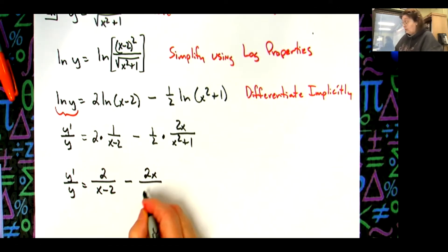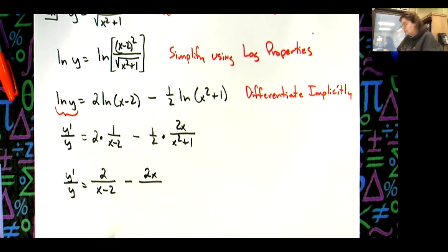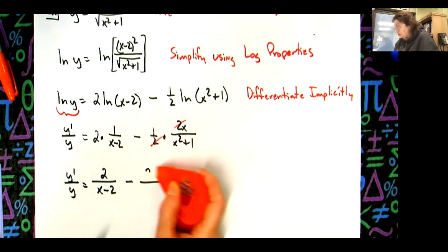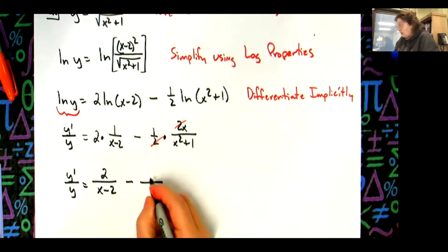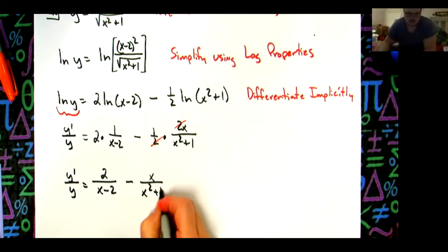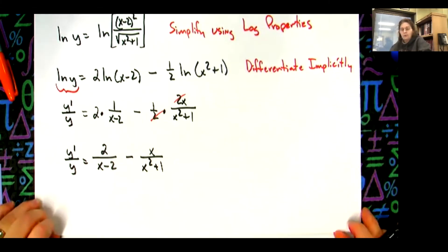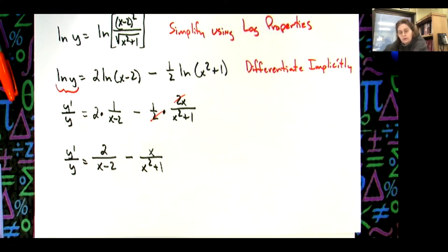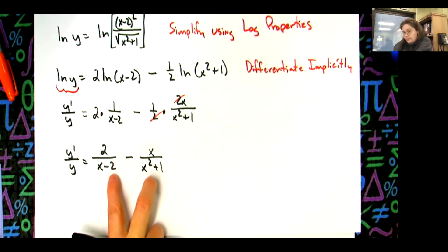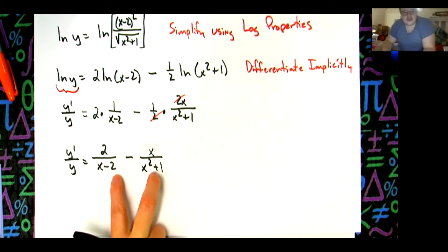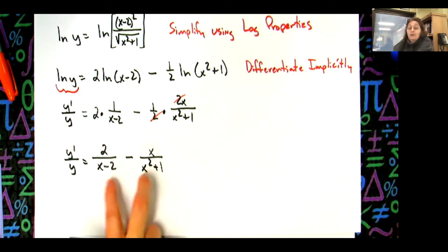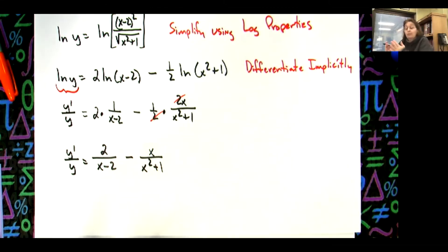Let's clean this up. We can cross out the twos, so y prime over y equals 2 over (x minus 2) minus x over (x squared plus 1). Now — what do I need to do next? Common denominators. We need to add these two fractions together with a common denominator.